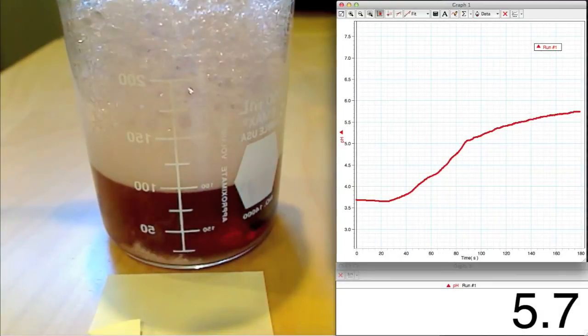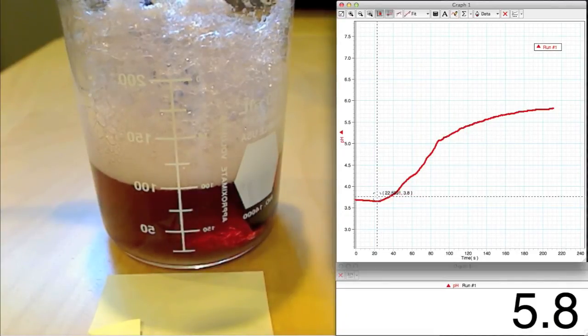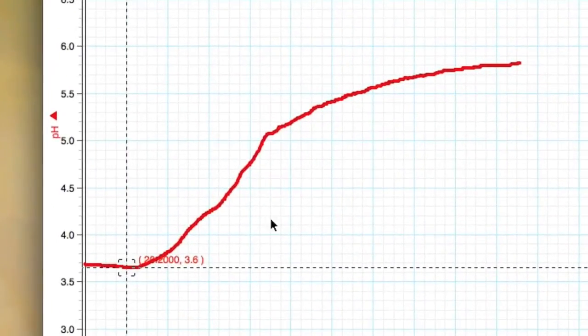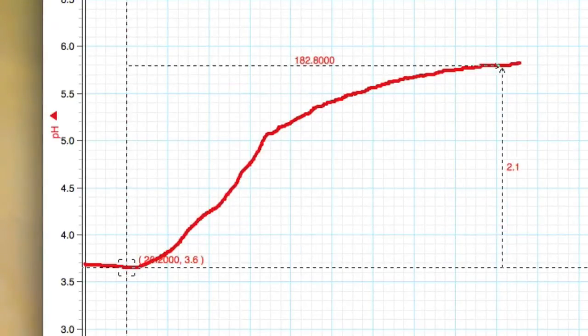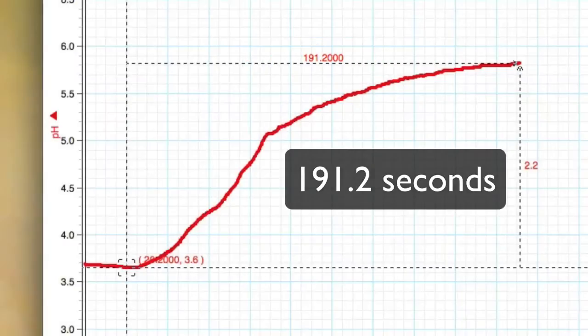You can tell the reaction has completed when the pH is no longer changing. So we can conclude that this chemical reaction caused the pH to change from 3.7 to 5.8 in 191.2 seconds.